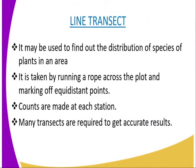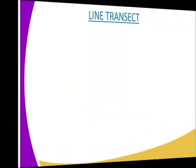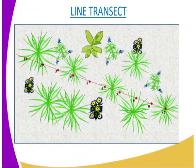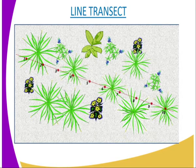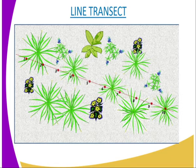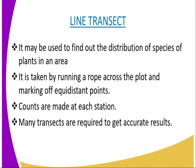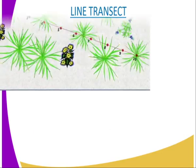We are going to start with the line transect, whereby a line transect may be used to find out the distribution of plants in an area. A line transect is taken by running a rope across the plot and marking equidistant points. Counts are made at each point, or stations. Only those plants along the line are identified, counted and recorded. Usually, a large number of transects are required to obtain more accurate results. A line transect is particularly useful when studying transition in habitats and populations of an area.